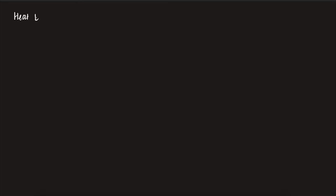Today's class, we are going to talk about heat equation. Next few classes, we are only going to concentrate on this heat equation. Let us start by writing out what it means. Essentially, generally speaking, we will write it like this: u_t minus Laplacian of u equals to f, where f will depend on x and t.